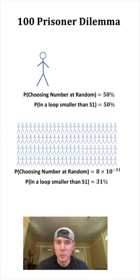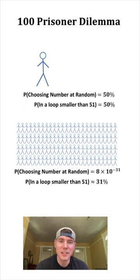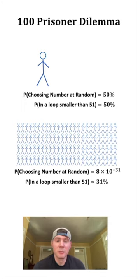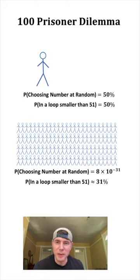It will still lose around 69% of the time because 69% of the time there will be a loop with greater than 51 numbers. So it isn't a foolproof plan, but it is way better than 8 times 10 to the negative 31. So if you want to learn more about this, it's called the 100 prisoner dilemma. There's a lot of interesting math behind all these probabilities.